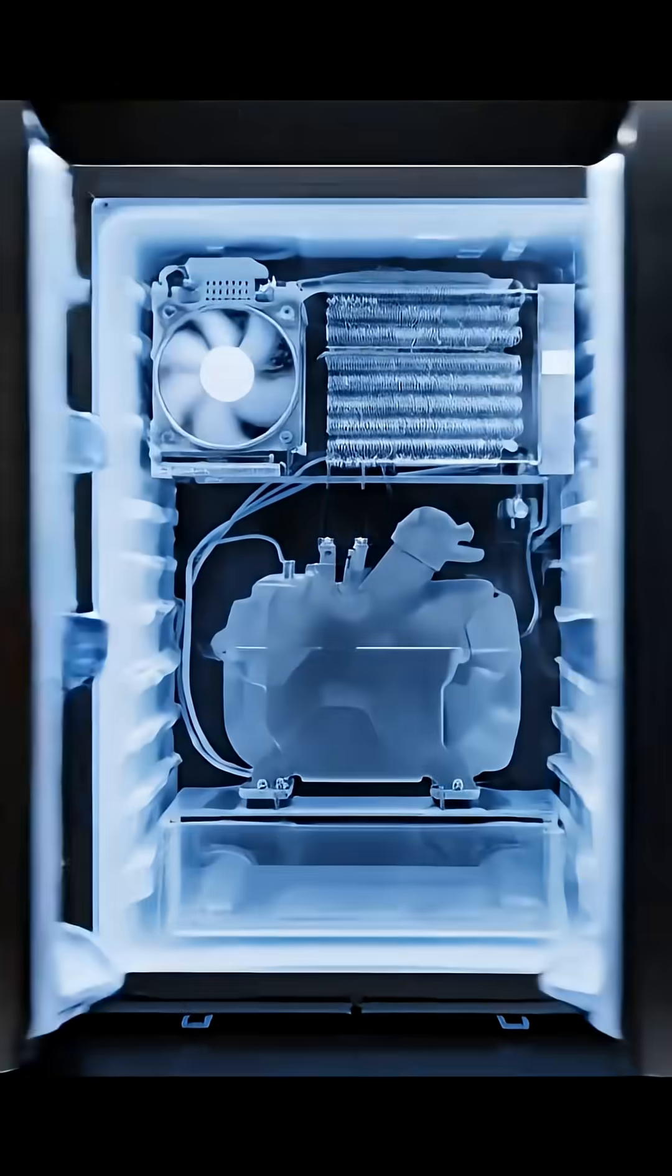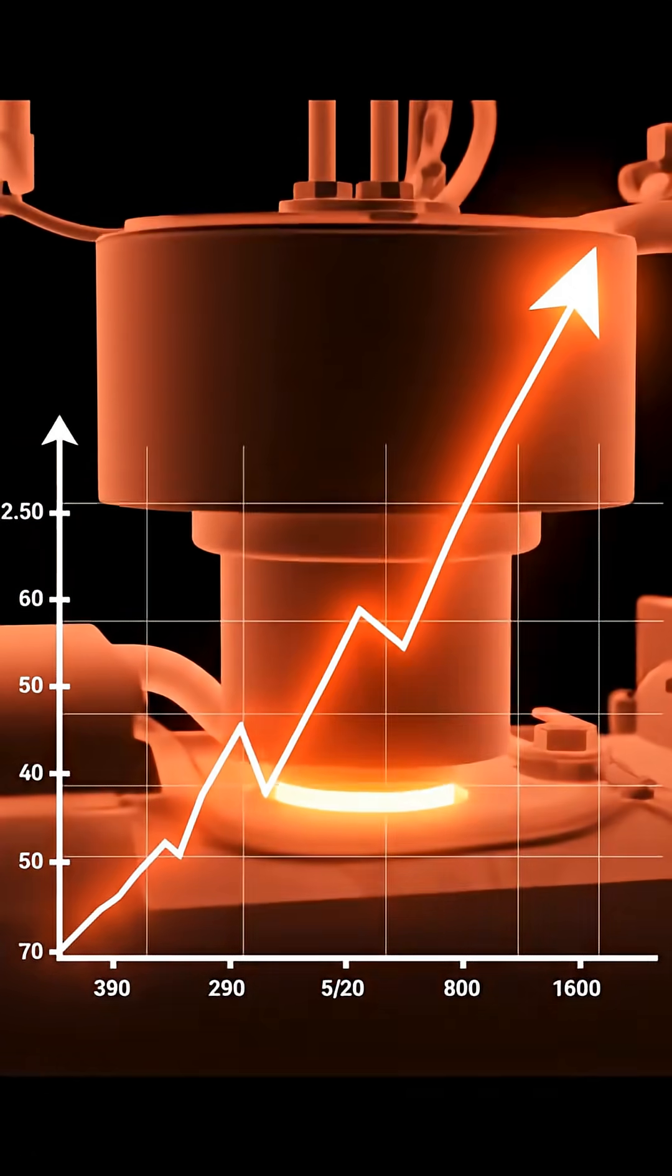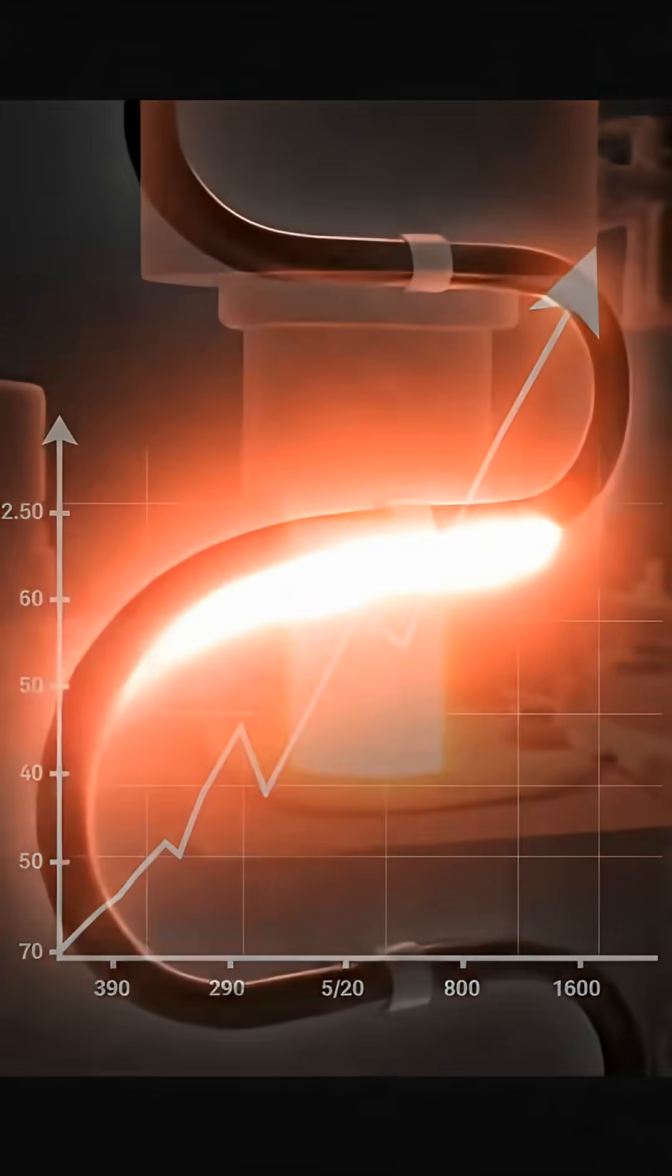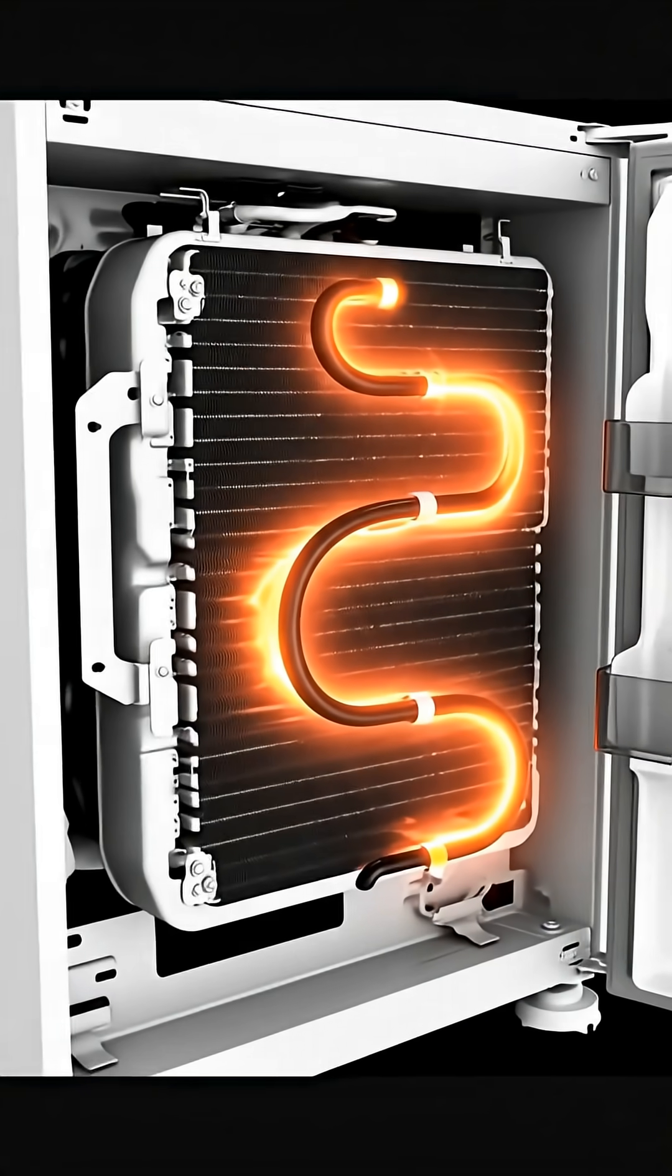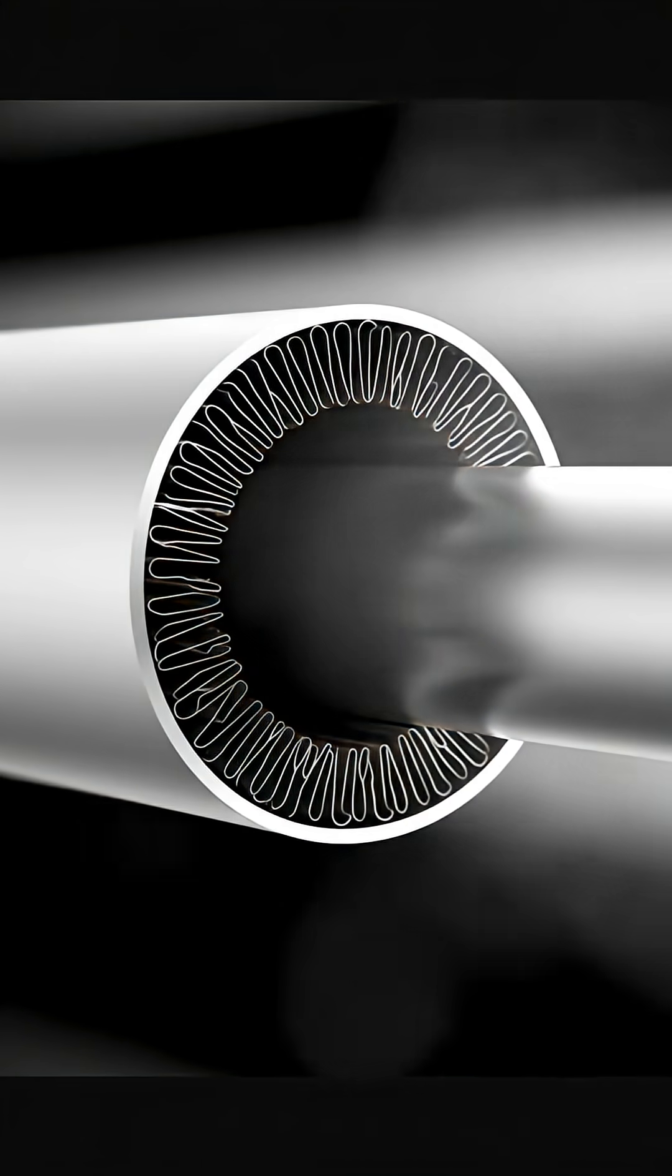The compressor pulls in low-pressure refrigerant gas and compresses it into a high-pressure, high-temperature vapor. The high-pressure refrigerant vapor moves through the condenser coil, releasing heat and condensing into a liquid.